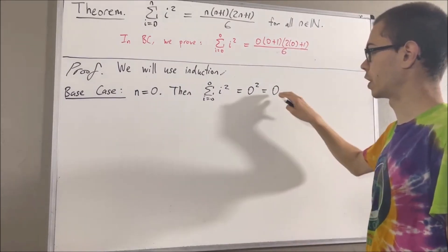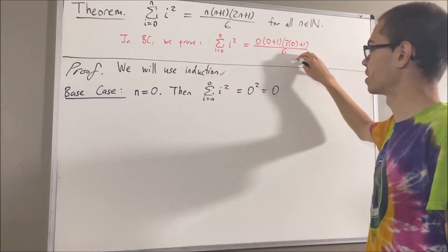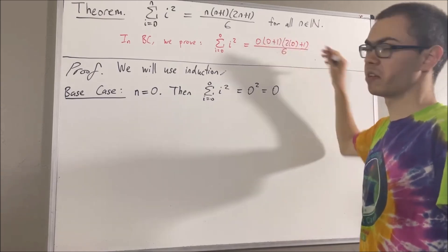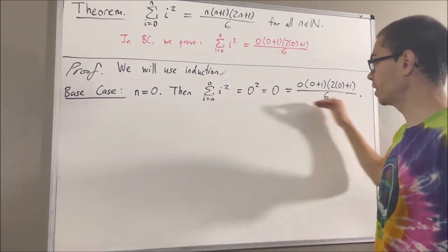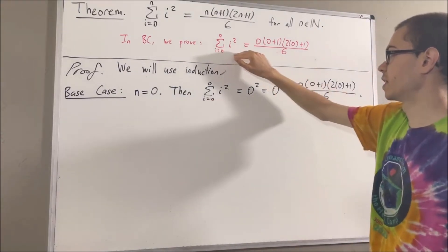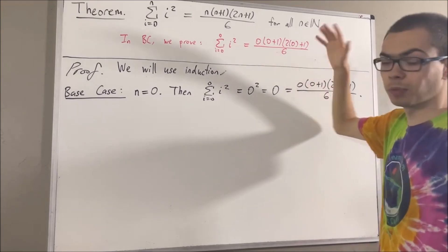And it's pretty clear that zero is equal to this because zero times anything gives us zero. So as you can see, we have shown that this is equal to this, which completes the base case.